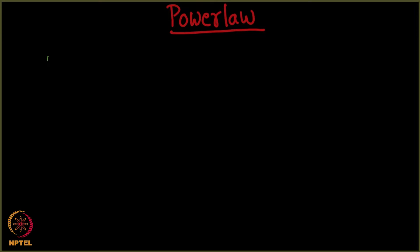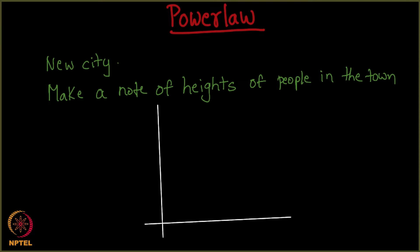Assume I go to a new city and I make a note of everyone's heights, heights of people in the town. I come back and then I look at this data and I try plotting the following very simple graph. On my x-axis, I will have heights. On my y-axis, I will have percentage of people with that height.